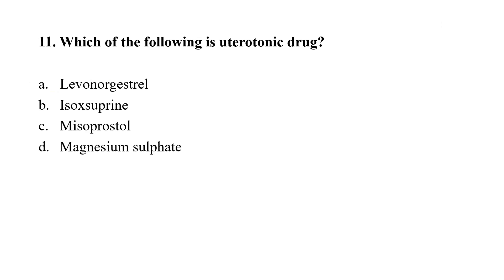Question number 11: Which of the following is a uterotonic drug? Option A: levonorgestrel; option B: isoxsuprine; option C: misoprostol; option D: magnesium sulfate. The correct option is C, that is misoprostol.